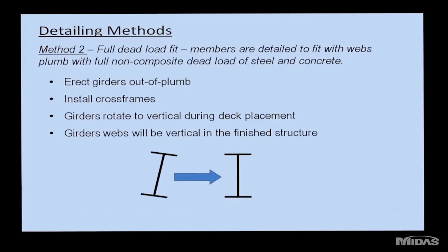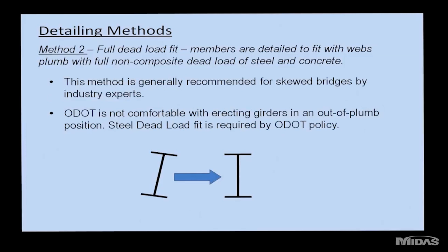An alternative is full dead load fit: girders are erected out of plumb, with cross-frames sized for the finished condition rather than the erected position. The girders must be forced into a twisted orientation when cross-frames are installed. If everything deflects as predicted, the girders will then rotate to plumb in the finished structure. This method is generally recommended by industry experts, but ODOT is not comfortable with it as it contradicts their past practice. They prefer to erect girders plumb and limit twist at the design stage.